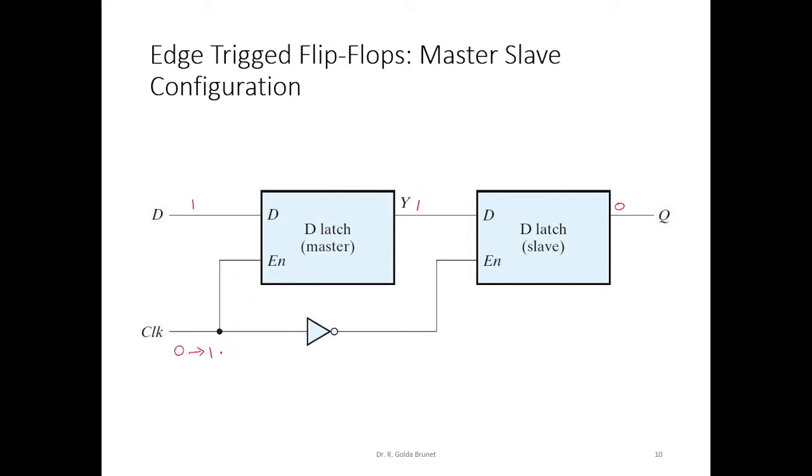When the clock goes from 1 to 0, the master flip-flop or master D latch is disabled and the slave latch will be enabled. After the clock reaches 0 from 1, if there is any change in the external input,